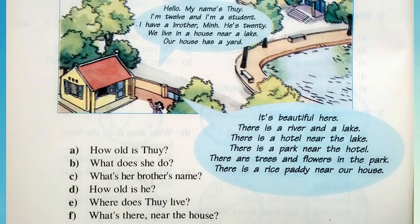Our house has a yard. It's beautiful here. There is a river and a lake. There is a hotel near the lake. There is a park near the hotel. There are trees and flowers in the park. There is a rice paddy near our house.